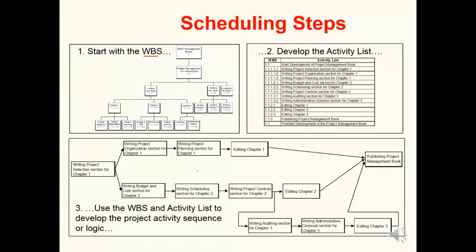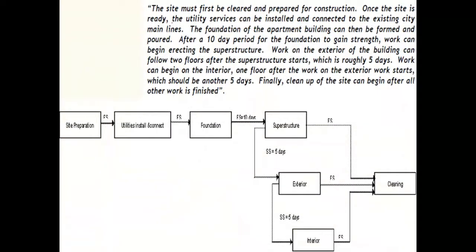As a quick recap of previous discussion: we start with a method statement or client requirements. Here the method statement stated the site must first be cleared and prepared for construction — that's the first activity, site preparation. Once the site is ready, utility services can be installed, which has a finish-to-start relationship with the previous work package. Then the foundation can be formed and poured. We convert this logical description into a network diagram, indicating relationships. There are different types of relationships — finish-to-start and start-to-start — and two others we'll cover today.